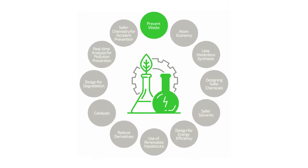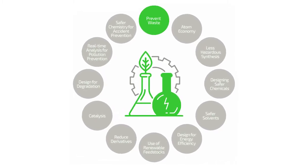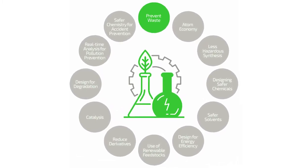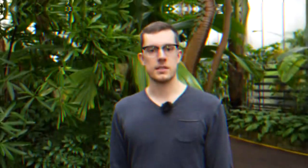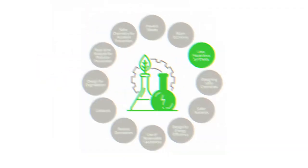The first principle is prevent waste. Doesn't sound very complicated, does it? This principle is generally applicable to everybody's day-to-day life, but it's particularly important when talking about work in the lab, because when working with dangerous or toxic chemicals, there is often a lot of waste produced. And this is where principle number three comes into play.